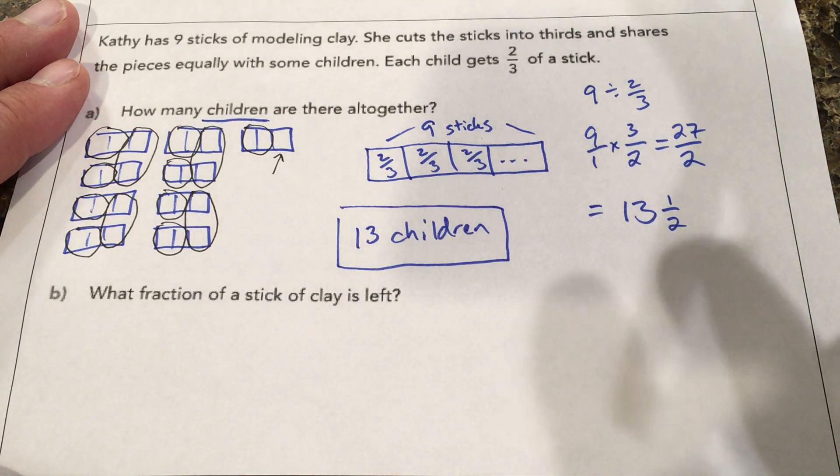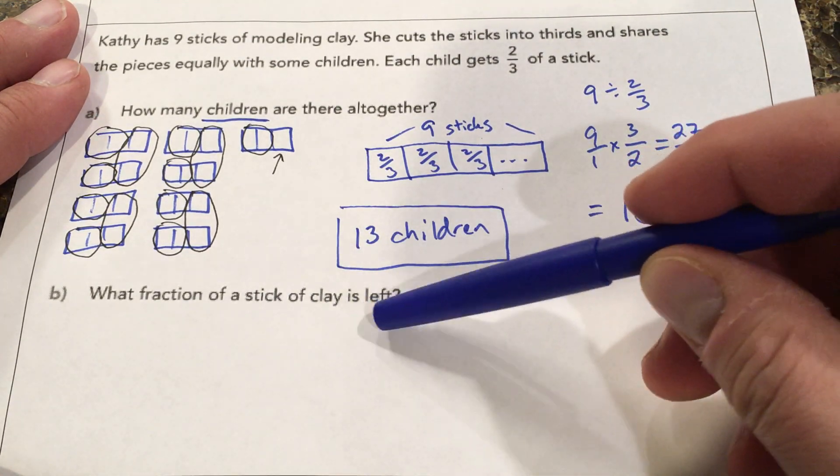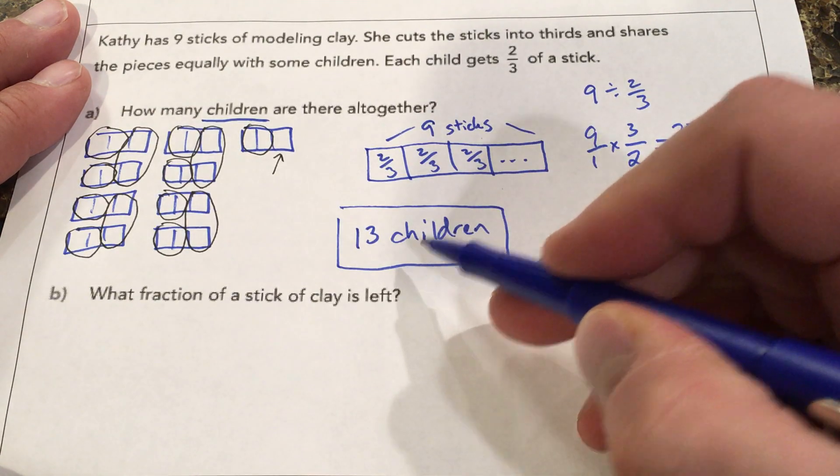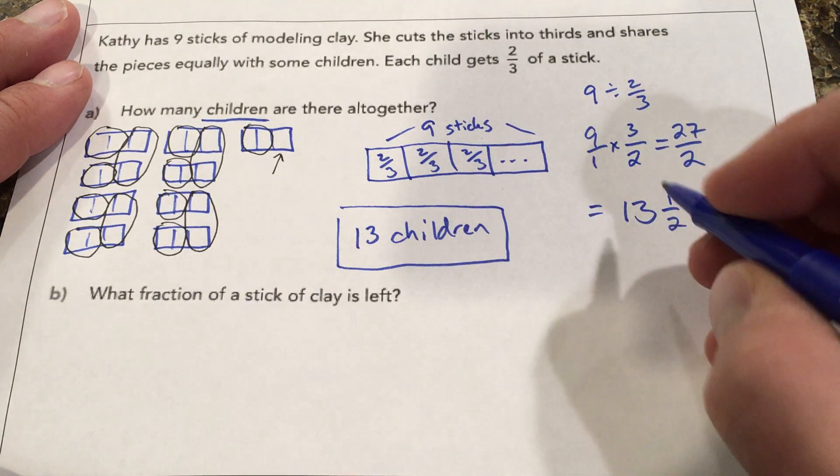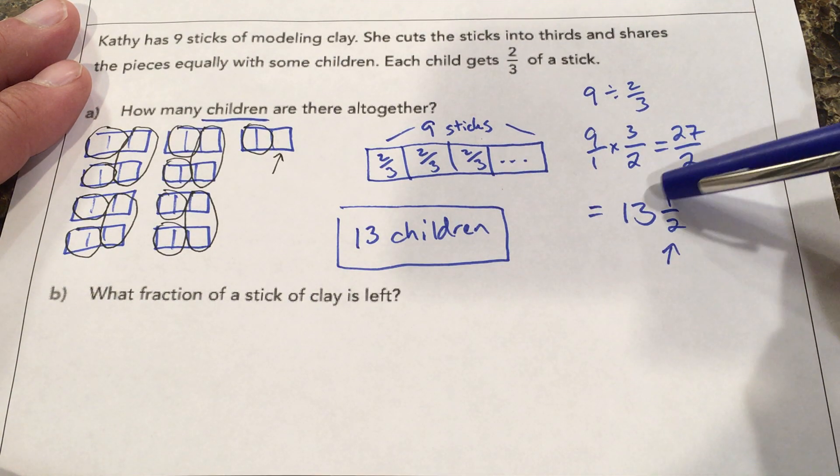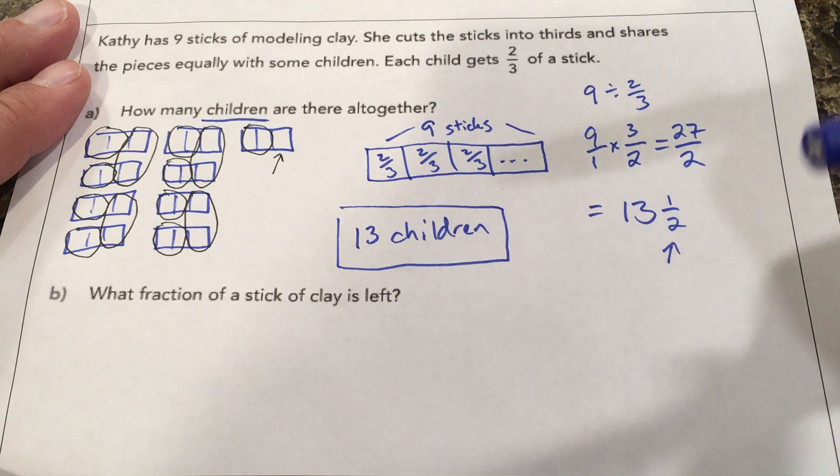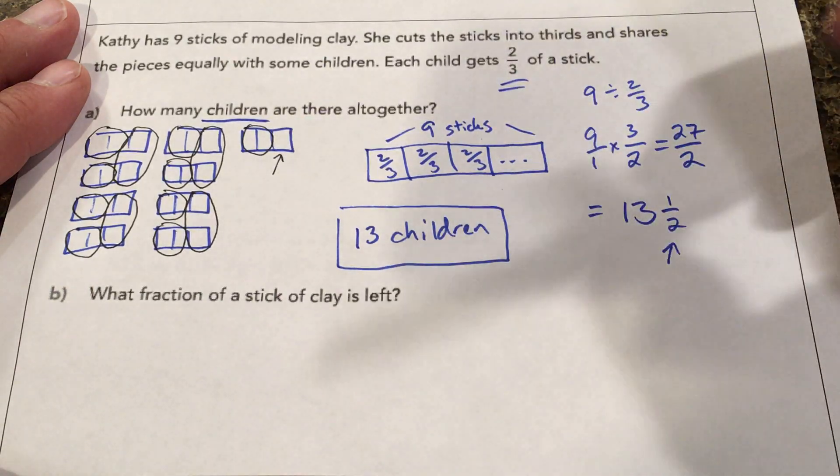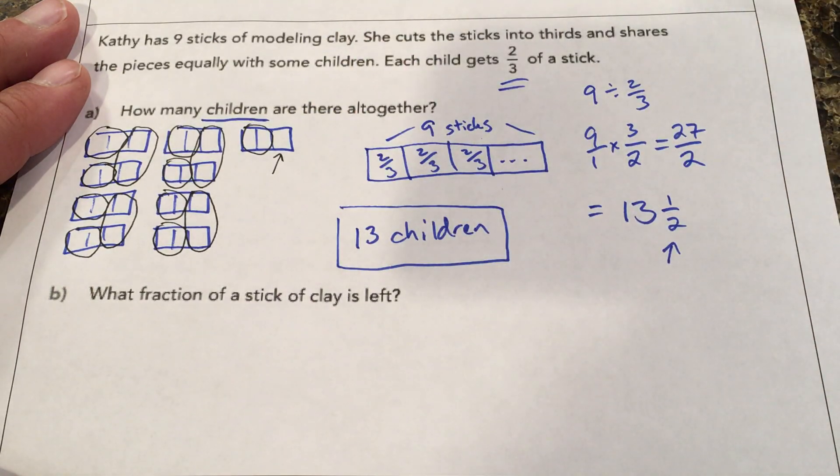Now this next part is where it gets a little tricky. What fraction of a stick of clay is left? You might think that since the answer was 13 but when we divide it we got 13 and a half, that half is left but we have to remember this half is half of two-thirds or half of what a child gets. From this model over here we see that one-third of a stick is left.